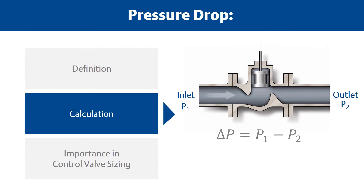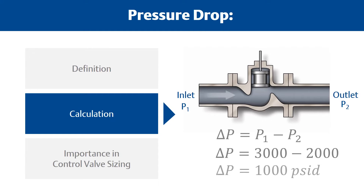To calculate the pressure drop across a valve, subtract the outlet pressure from the inlet pressure. For example, if P1 is 3,000 PSI and P2 is 2,000 PSI, the pressure drop will equal 1,000 PSID.